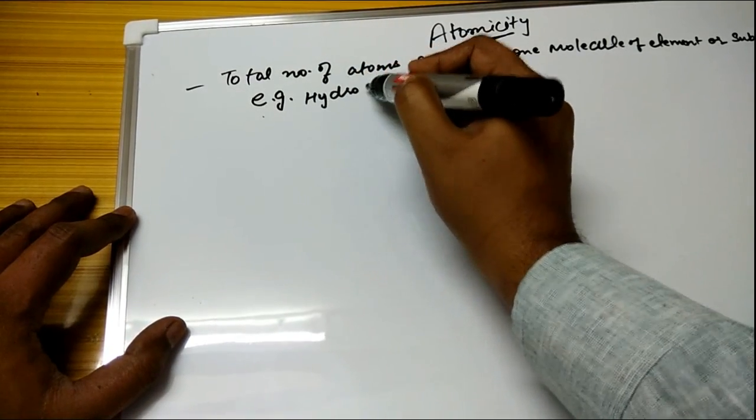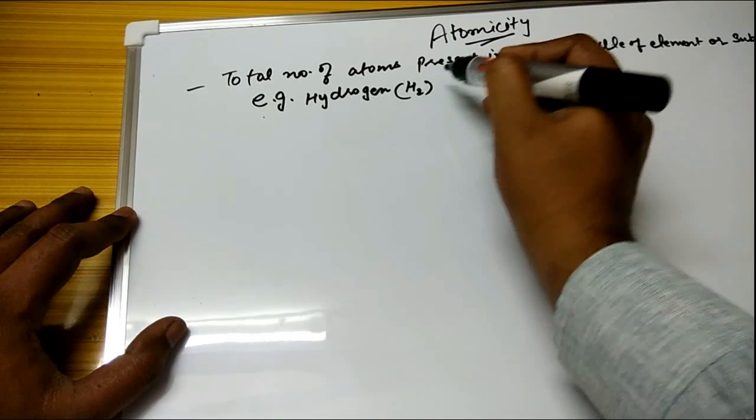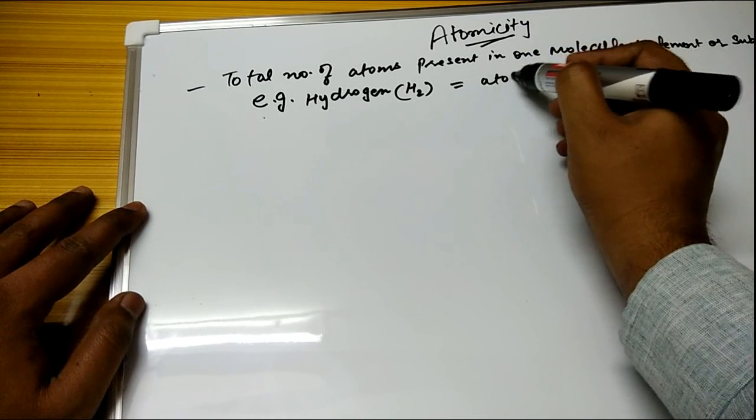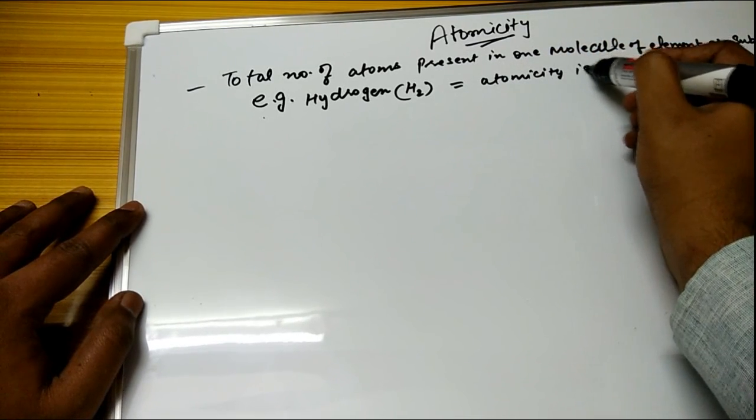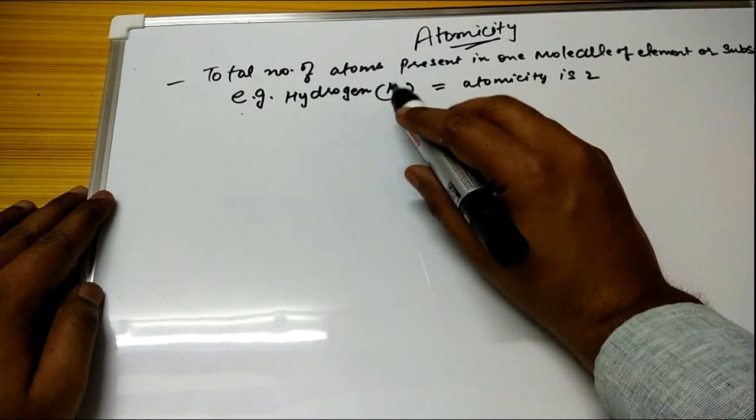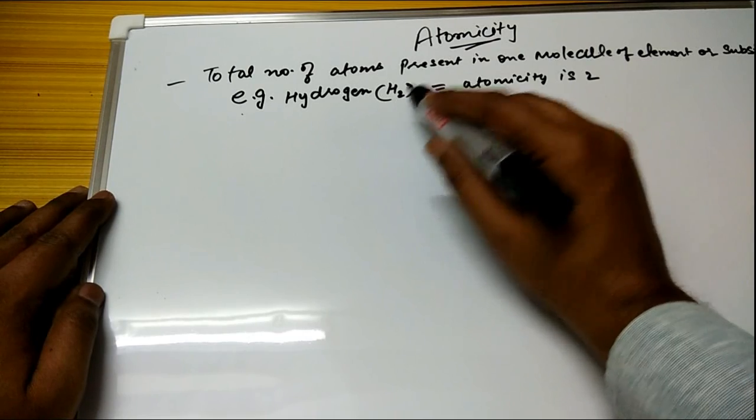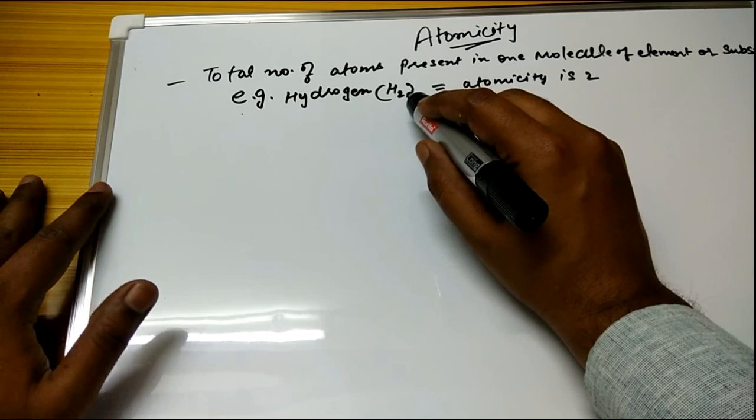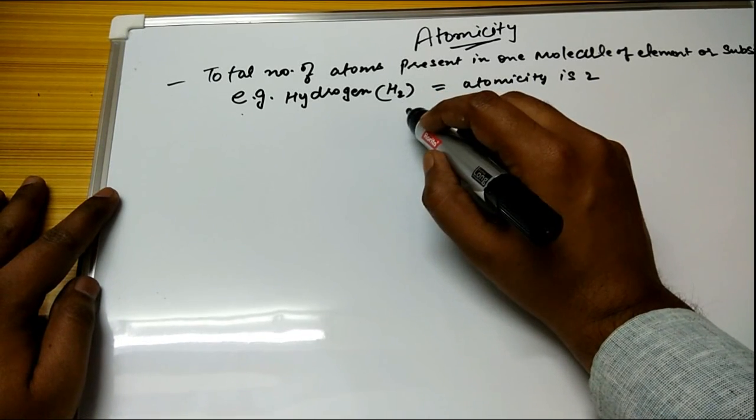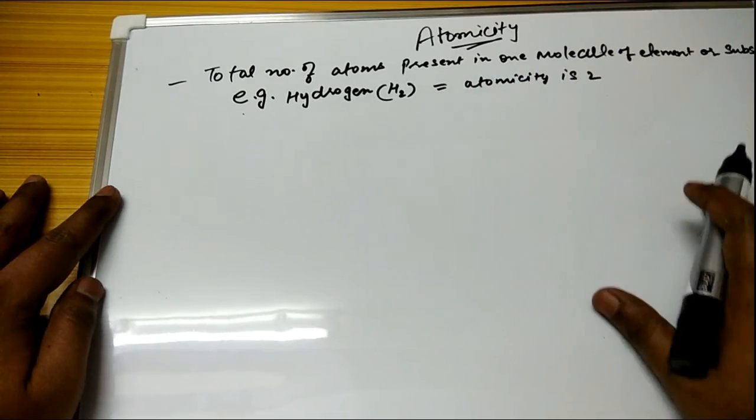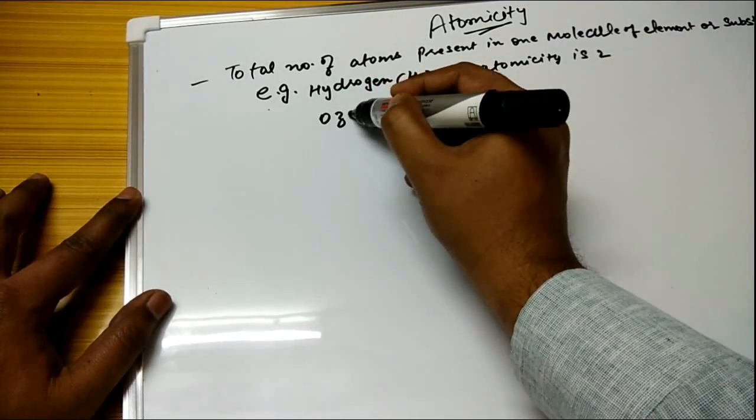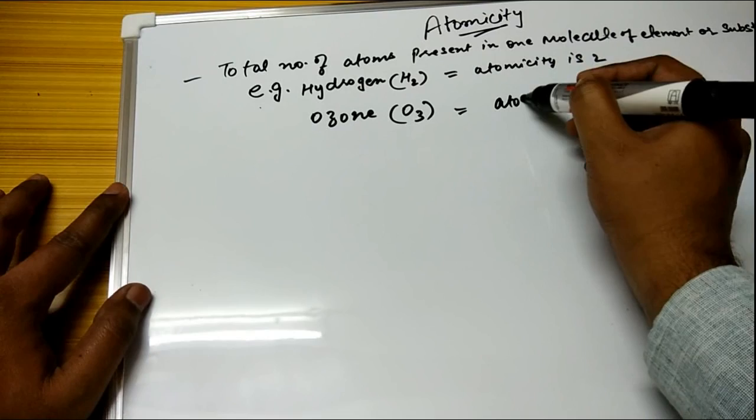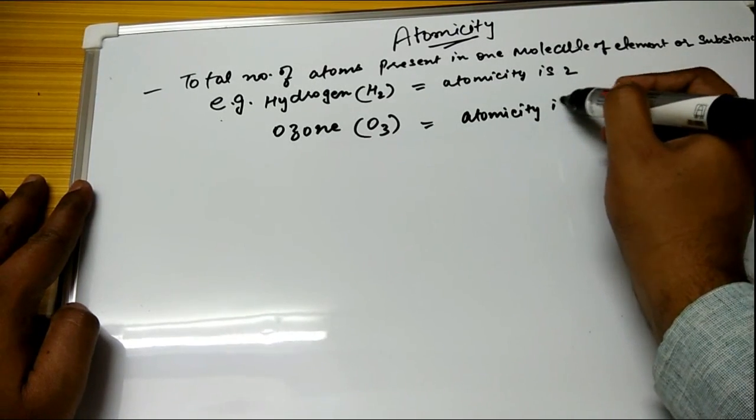For example, hydrogen denoted by H2 has atomicity of 2. Why? Because hydrogen never exists as a single atom, so it is paired with 2 atoms. So its atomicity is 2. The number of atoms attached to the whole molecule becomes its atomicity. For another example, ozone denoted by O3 has atomicity of 3. Simple.